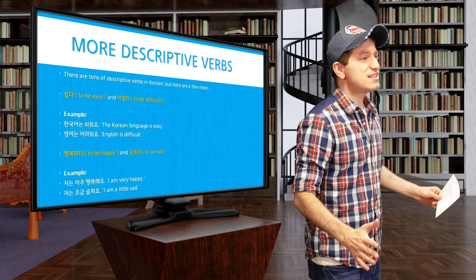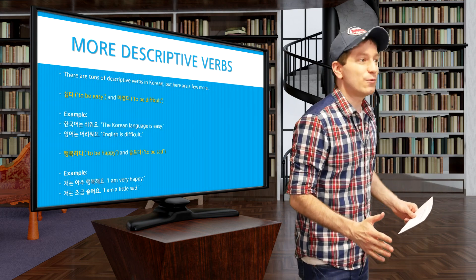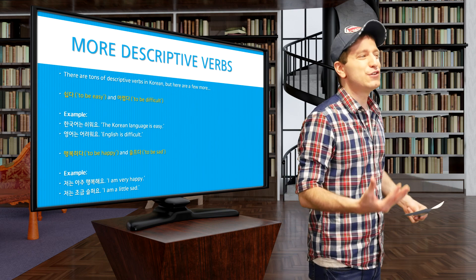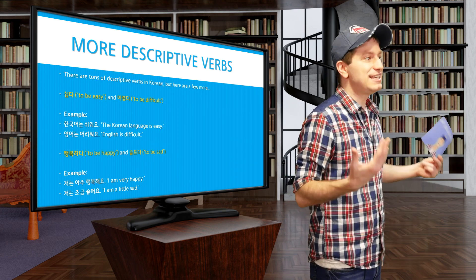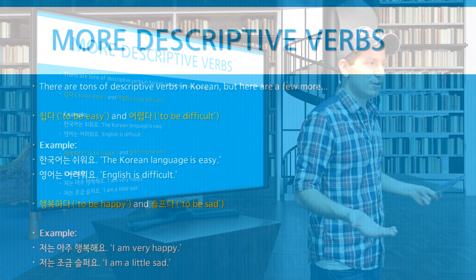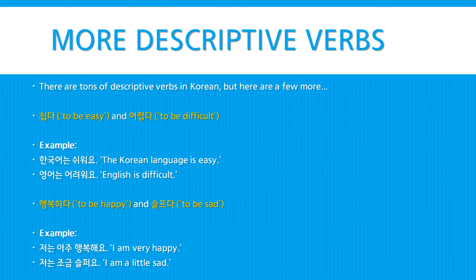Now there are tons of descriptive verbs in Korean that we're not going to be learning in this lesson, but here are just a few more: 쉽다, to be easy, and 어렵다, to be difficult. For example, 한국어는 쉬워요 — the Korean language is easy. Or 영어는 어려워요 — English is difficult.